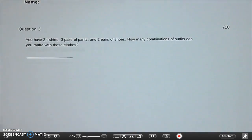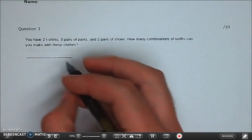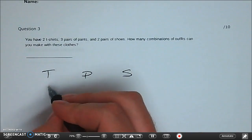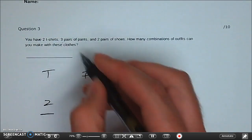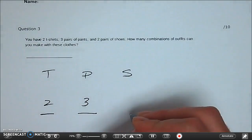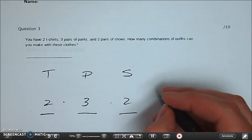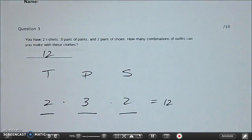Question number three. You have two shirts three pairs of pants and two pairs of shoes how many combinations of outfits? Well you have to have a t-shirt you have to have pants and you have to have shoes. How many t-shirts can you choose from? Two. How many pants can you choose from? There's three. How many shoes can you choose from? There's two. Multiply them together. Two times three is six. Six times two is twelve. That means there's twelve outfits that you can choose from.